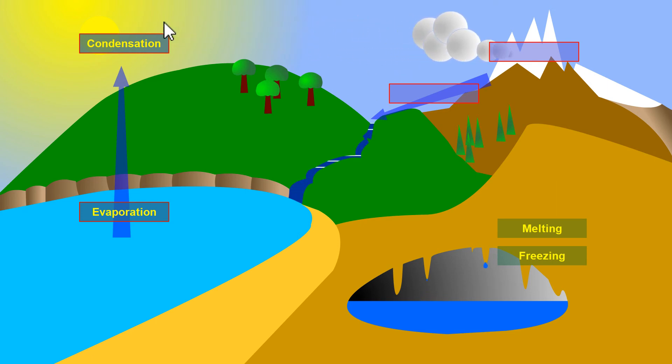The change of state here, when the water vapor becomes liquid in the clouds and turns into fine droplets of water in suspension, this is condensation. Here, when it's cold, it's solidification.